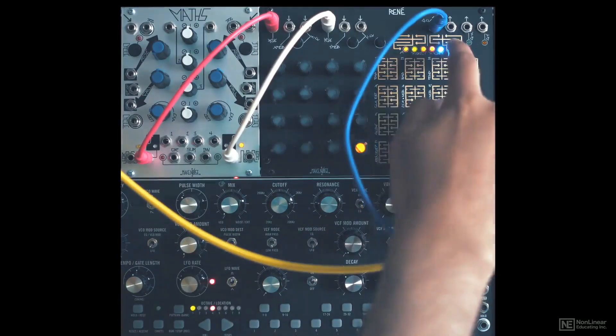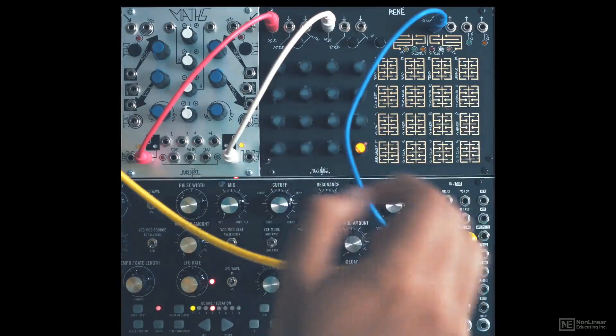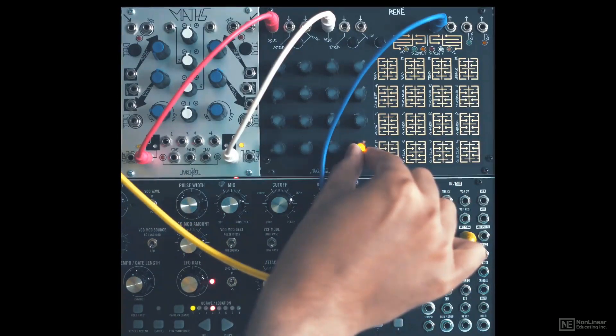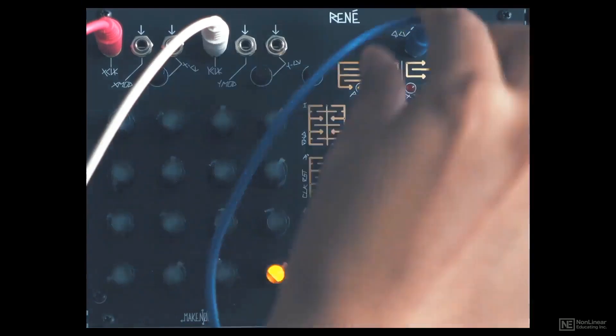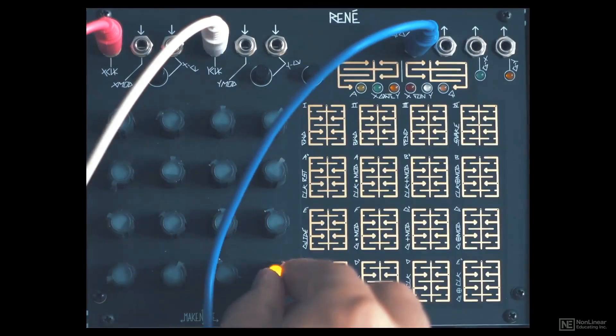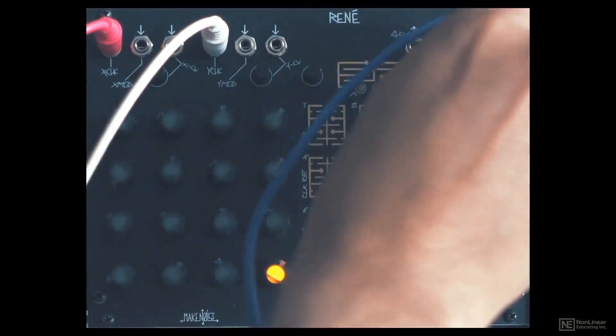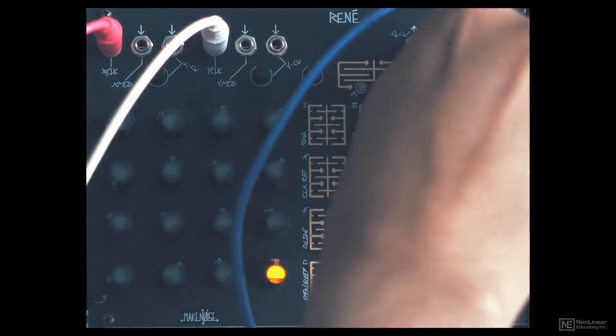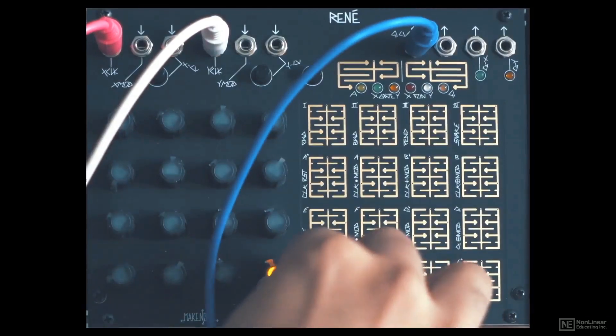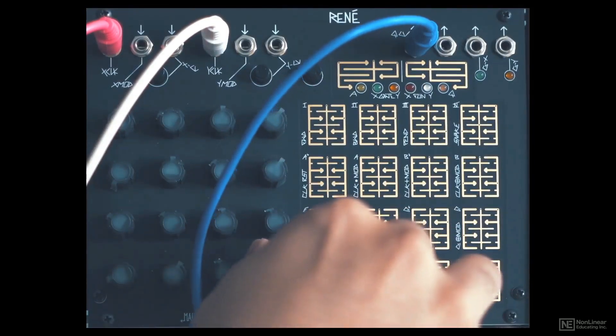Let's get out of this page for a second. Now we already know that every step's CV can be changed by changing the value on the dial. It is stepped right now as we're using the quantized CV out. If we were to use the unquantized out, it would be completely free running. Back to the quantized CV out, which is stepped but completely chromatic.